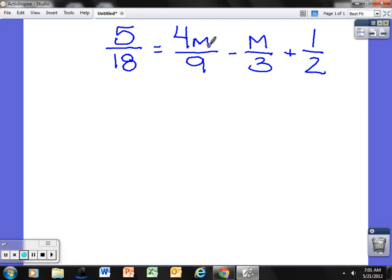But to do that we have to mess with all these fractions and this can be kind of tedious because I'm going to have to subtract a half from both sides. So the best thing to do with this is look at your denominators 18, 9, 3, and 2 and find their least common multiple.